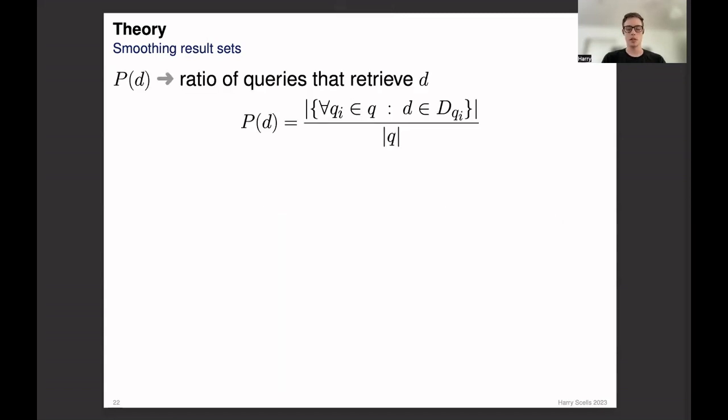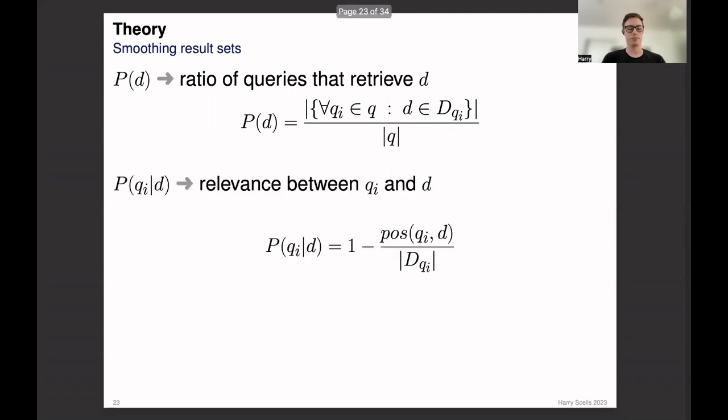So to calculate the probability of a document, we can estimate the ratio of queries that retrieve a document. And from the previous example, two out of the three queries retrieved the document, and this means that the probability of that document is two-thirds. The second estimation is the probability of a query given a document, and we can calculate this as the relevance between a query and a document. We estimate relevance as the relative rank position of the document as retrieved by the query.